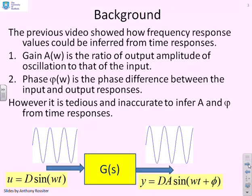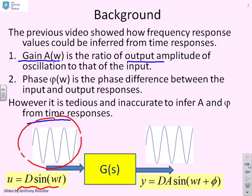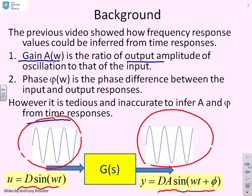The previous video showed what frequency response means. We defined the gain, A(ω), as the ratio of output amplitude to input amplitude when the input is sinusoidal. We had a sine wave d·sin(ωt) going into a system, and an output which asymptotically is also sinusoidal, written as dA·sin(ωt + φ). The ratio of the amplitudes, output to input, is A.